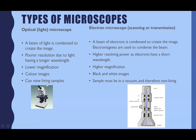In contrast, the electron microscope — whether scanning or transmission — emits a beam of electrons condensed using electromagnets to create the image. Electrons have a much shorter wavelength, so you get a higher resolution and higher magnification, but you can only get black and white images. The samples must be in a vacuum — no air — so you cannot view living samples.